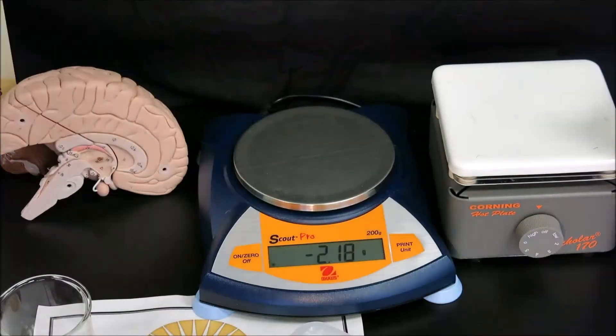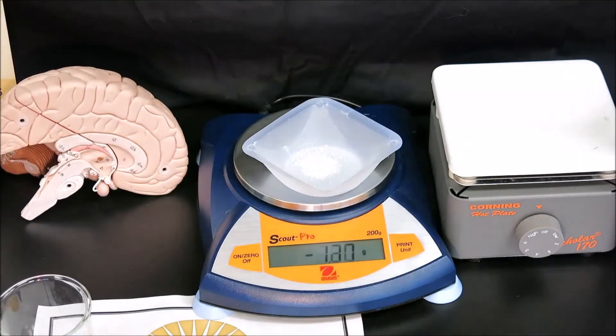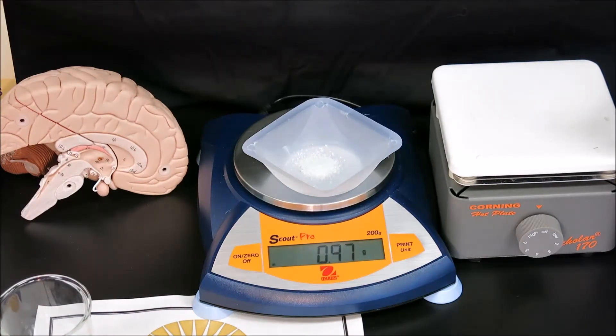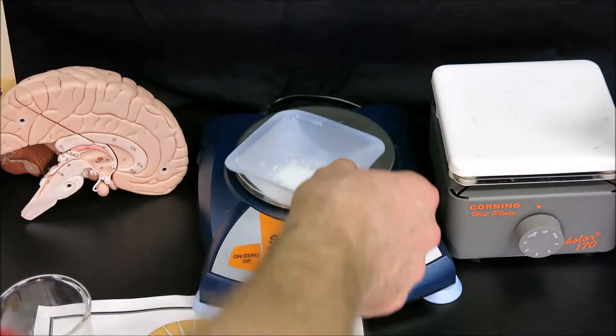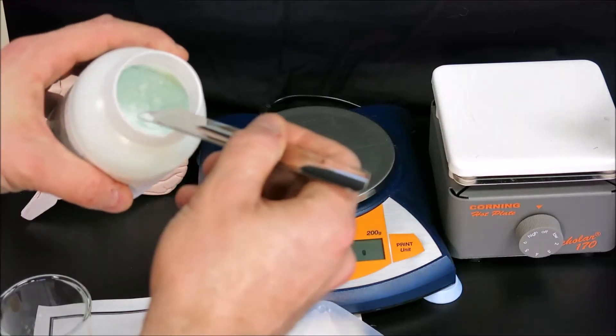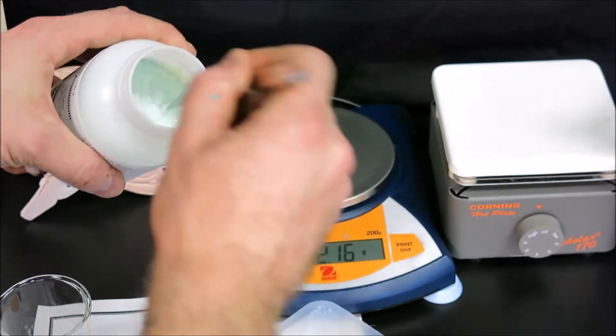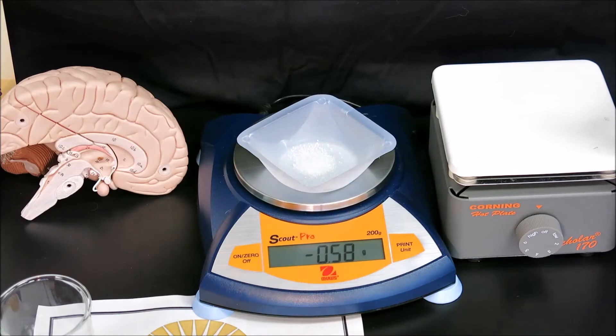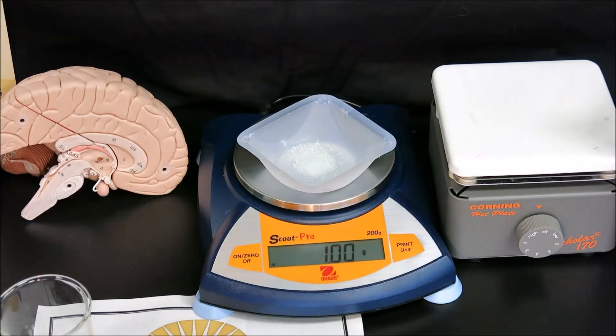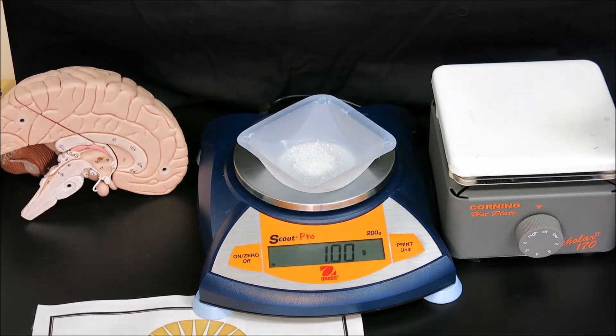If we do get excess solid, we cannot put it back into the container and must put it into our waste container. While this may take some time, you end up with a very accurate mass such as 1.00, and we don't have any waste. Now we can put our spatula in the waste container, close our stock container, and get ready to prepare the solution.